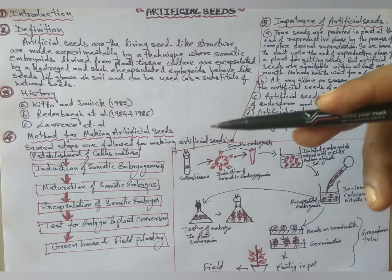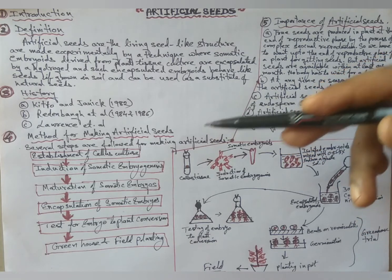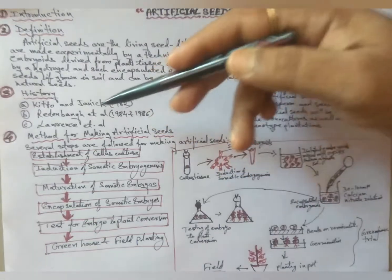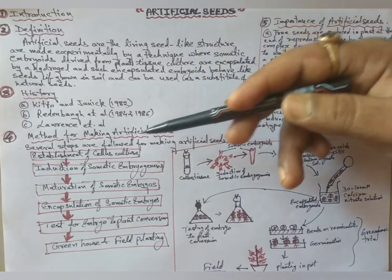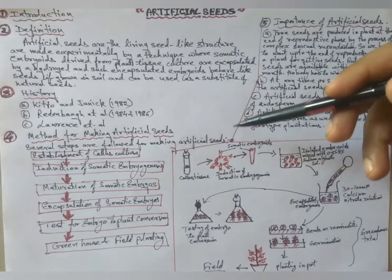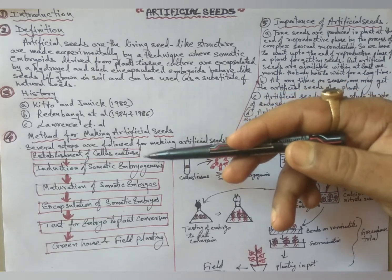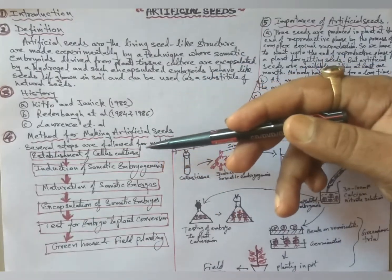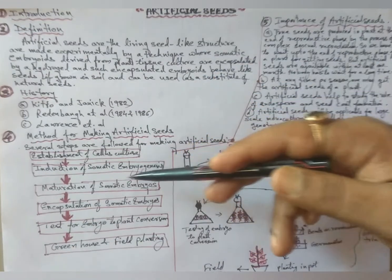Method for making artificial seeds: There are several steps. First, establishment of callus culture. Next, induction of somatic embryogenesis. After that, maturation of somatic embryos.